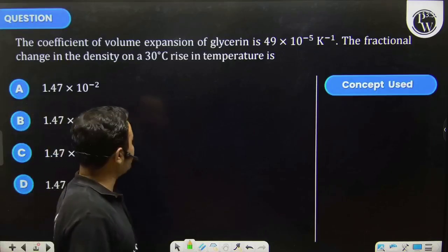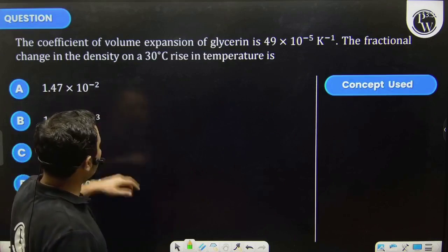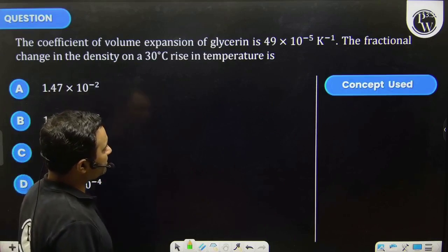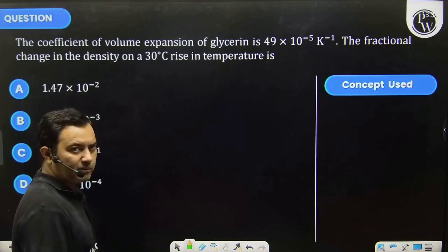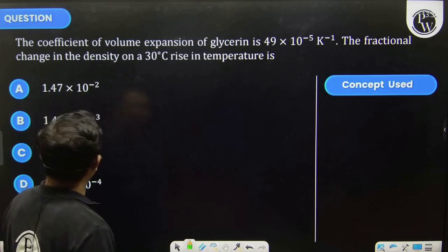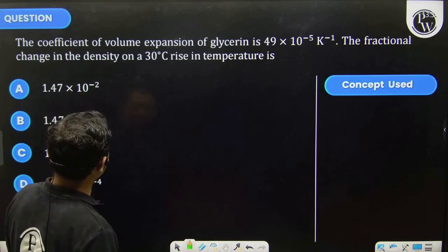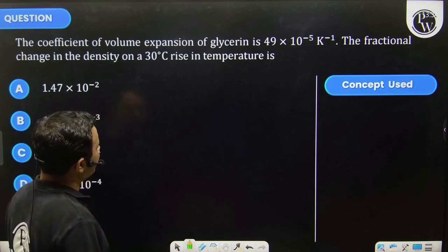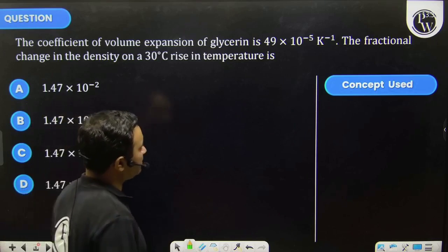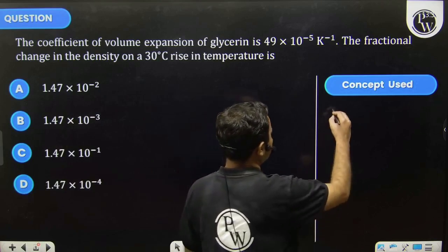Students, let's see this question. The coefficient of volume expansion of glycerin is 49 × 10⁻⁵ per Kelvin. The fractional change in the density on a 30 degree Celsius rise in temperature is... The concept used is thermal expansion.